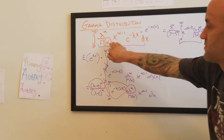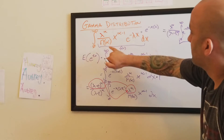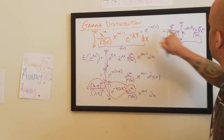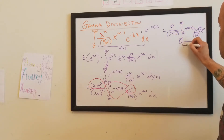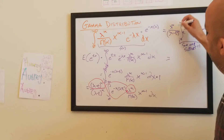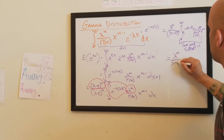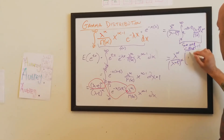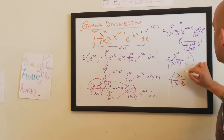This right here is just another way of rewriting this. But instead of having lambda as our term, we have lambda minus t. So right here, instead of negative x times lambda, we have negative x times lambda minus t. This lambda minus t is also here. So what we have is a sum over a support — and we know that when we integrate something over its support, it's just equal to one. So we can rewrite this as lambda over lambda minus t, all to the alpha.